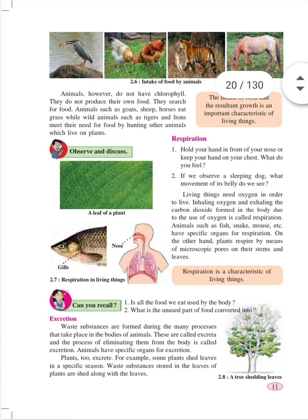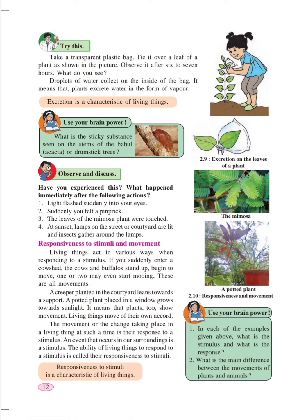Excretion in animals and plants is also done. In plants, excretion is done with the help of leaves and sap. Plants shed their leaves, and new leaves are formed. In some other plants, a sticky substance called sap is given out. You can find this sap in trees like coconut, bubble tree, and jackfruit tree.